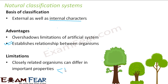Summarizing the improvement of the natural system: its basis does not change with time. More importance is given to the sexual characters — that is, the internal characters — while both vegetative and sexual characters are considered together, overcoming the main weakness of the artificial system.